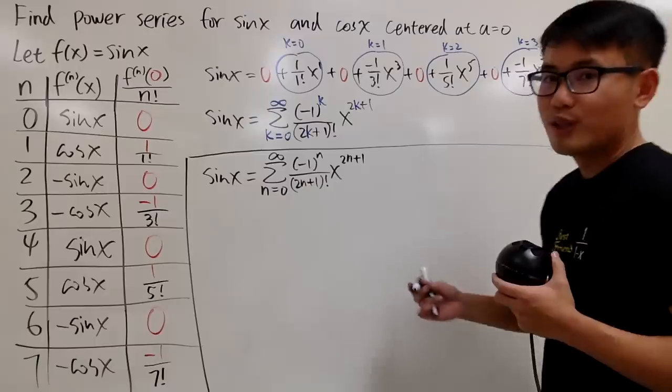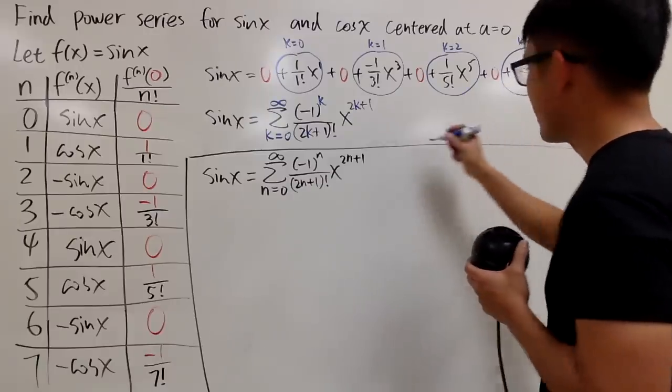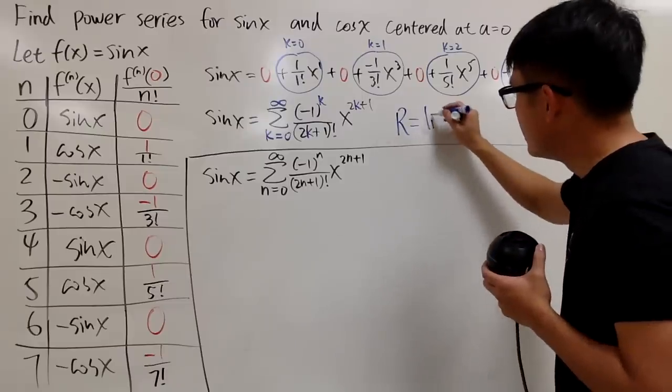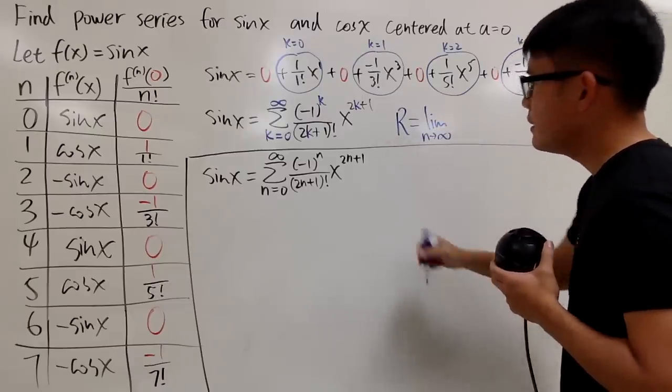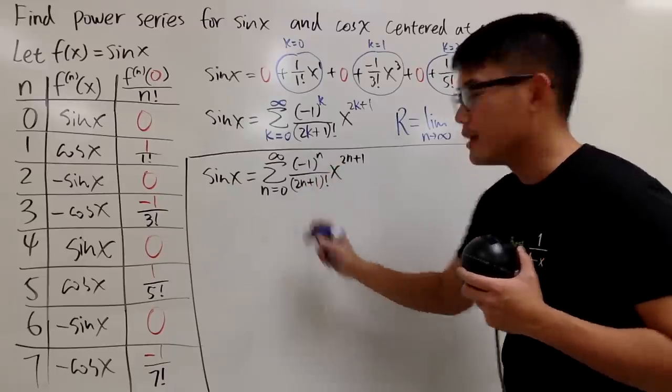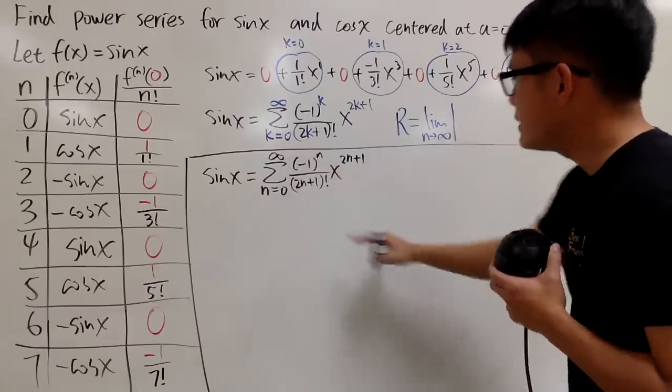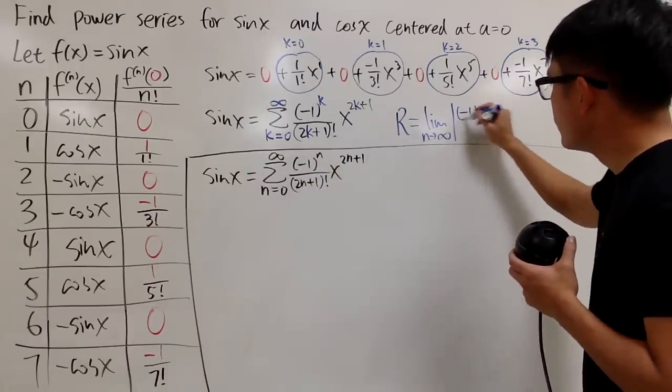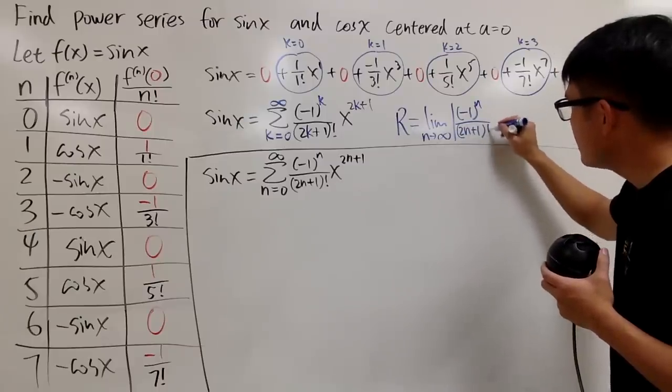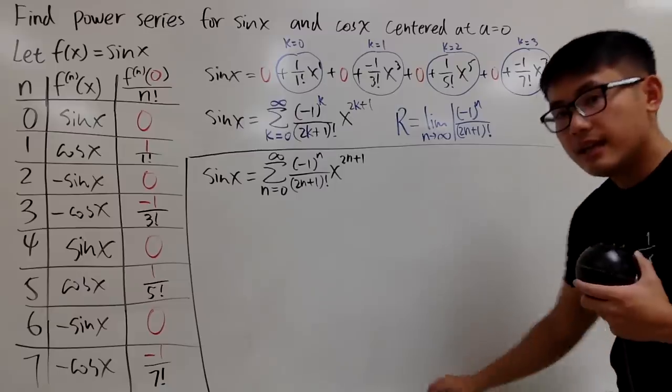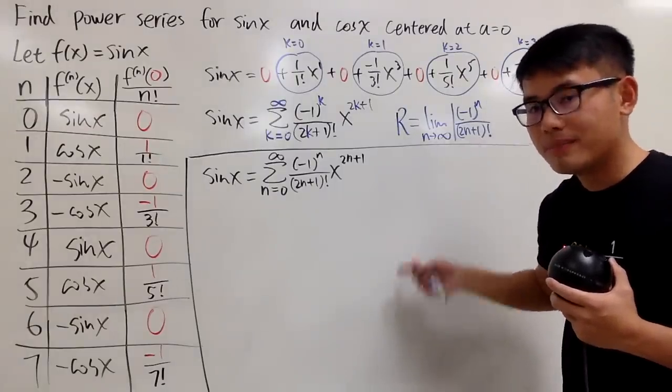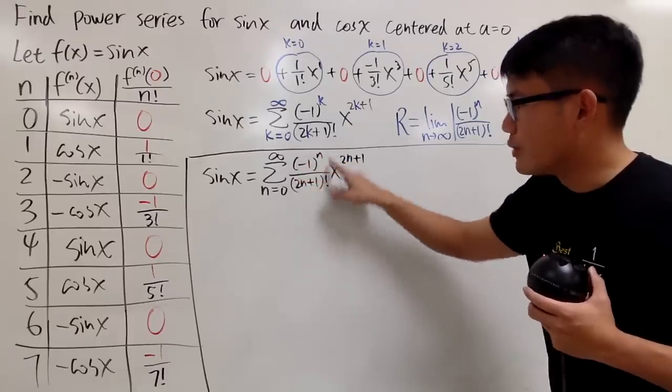Of course, we need to figure out the radius of convergence. I will show you. Let's do the work right here. Just from last time, r is equal to the limit as n goes to infinity. And look at this as your coefficient sequence. This is your cn. What you do is, you do cn first, so I'll put down negative 1 to the n power over 2n plus 1 factorial, and then you are going to divide it by cn plus 1,